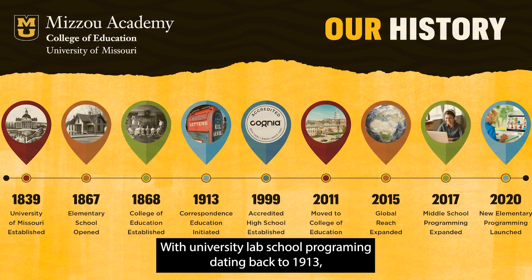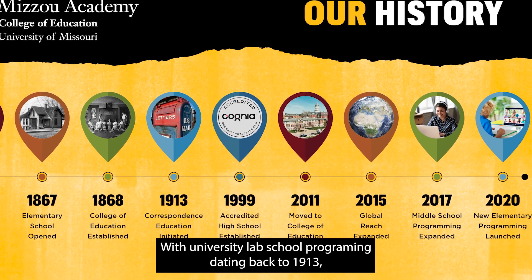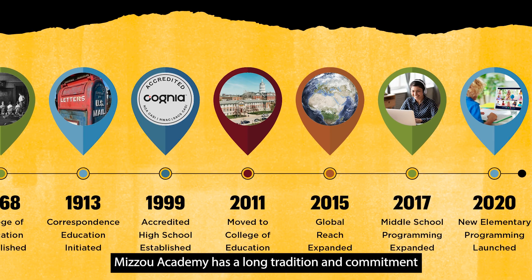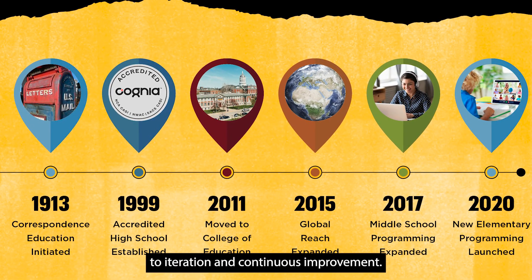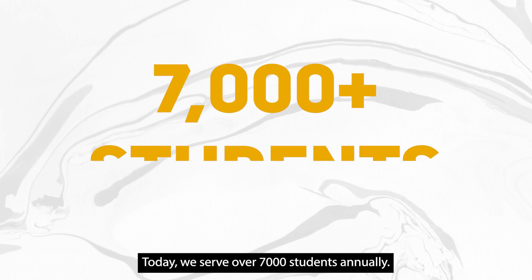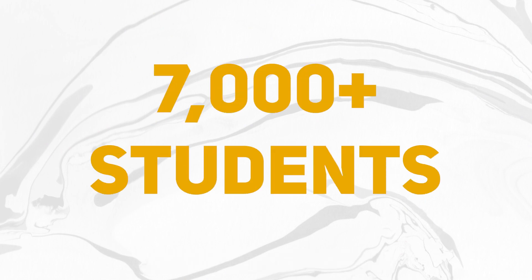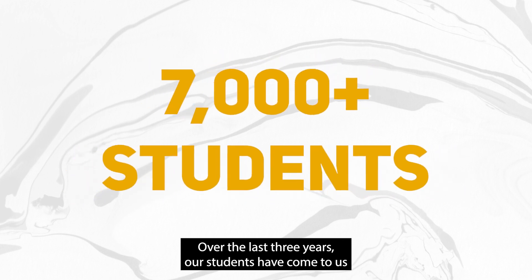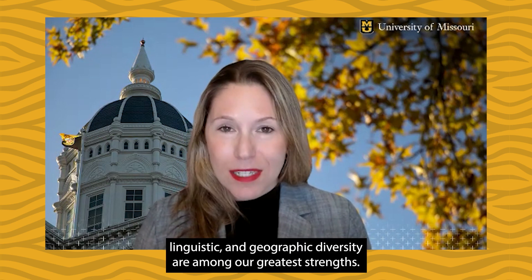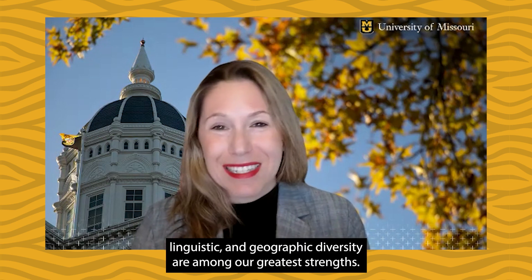With university lab school programming dating back to 1913, Mizzou Academy has a long tradition and commitment to iteration and continuous improvement. Today, we serve over 7,000 students annually. Over the last three years, our students have come to us from 60-plus different countries of residence and all U.S. states and territories. Our cultural, linguistic, and geographic diversity are among our greatest strengths.